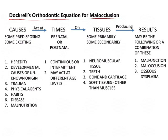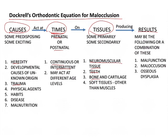Dockrell said malocclusions are the results of a particular cause — such as hereditary, trauma, or any developmental cause — acting at a particular time. This time could be prenatal or postnatal, and the cause could be acting continuously or intermittently. The cause acts on some tissue, which could be soft tissues, hard tissues like neuromuscular tissues, or teeth and bones. Because the cause is acting on a particular site, it produces a specific result, which could be malocclusion.